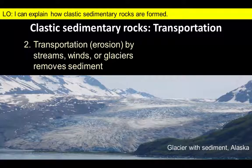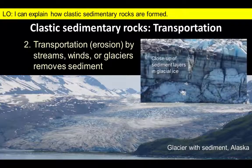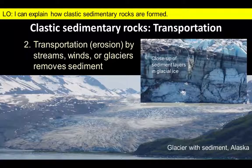Finally, sediment of all sizes is transported by glaciers. For example, the dark surface of the Reed Glacier in Alaska reflects that sediment is exposed as ice melts. If we look closely at the glacier, we can see layers of sediment encased in the ice.